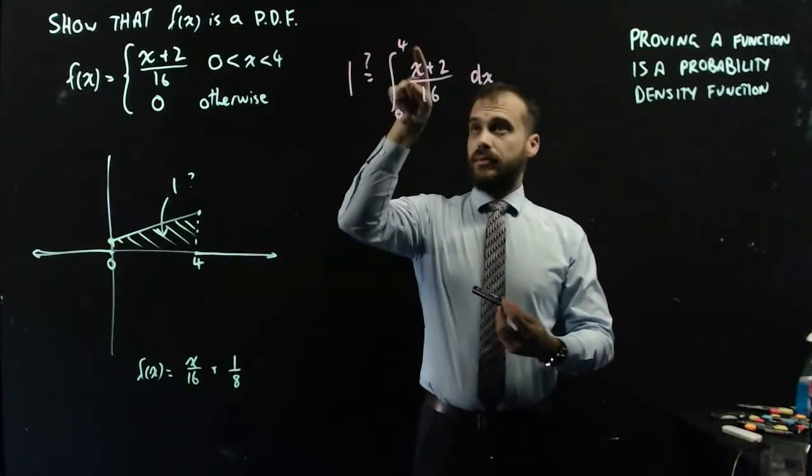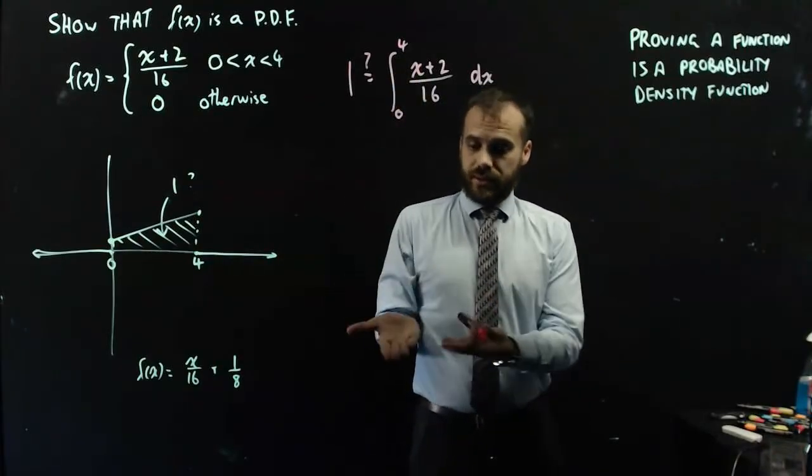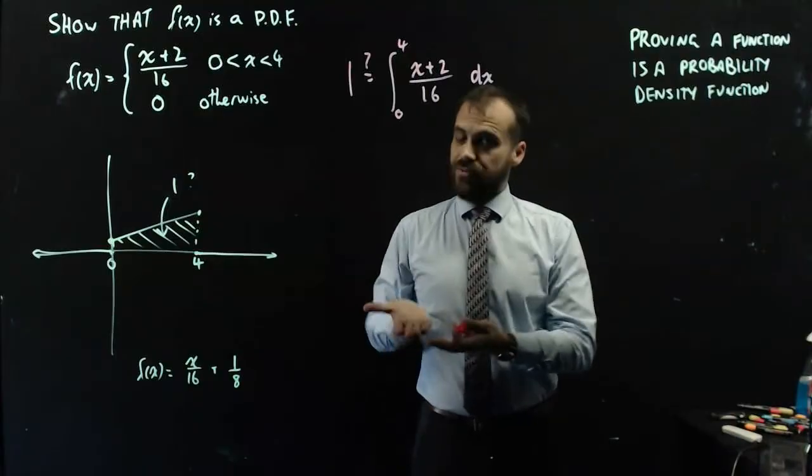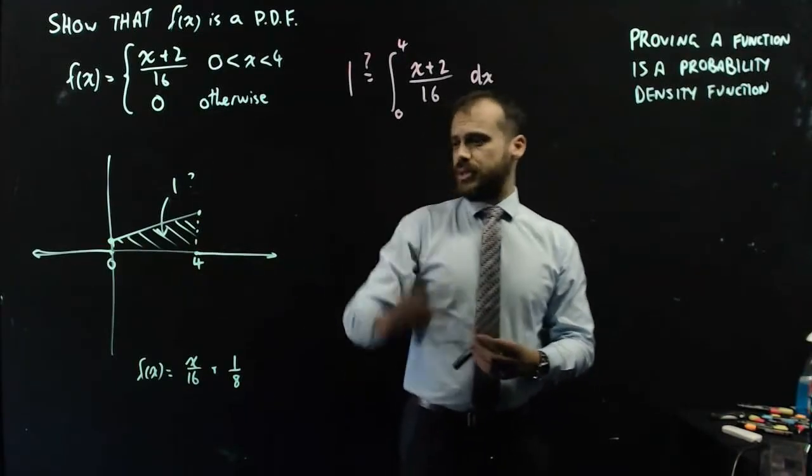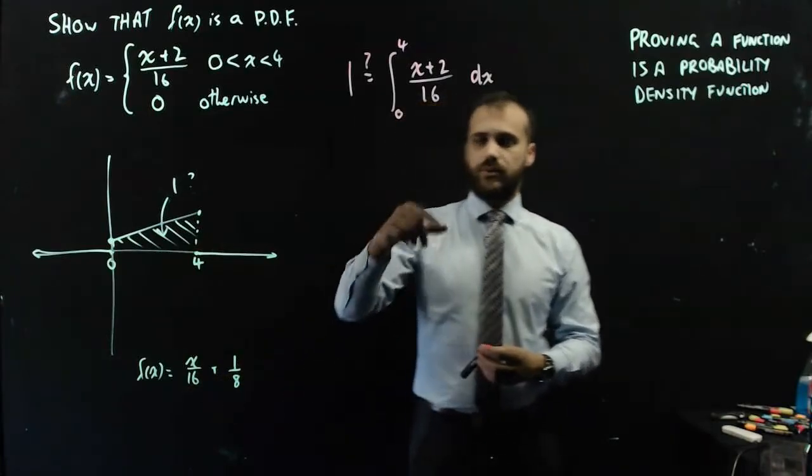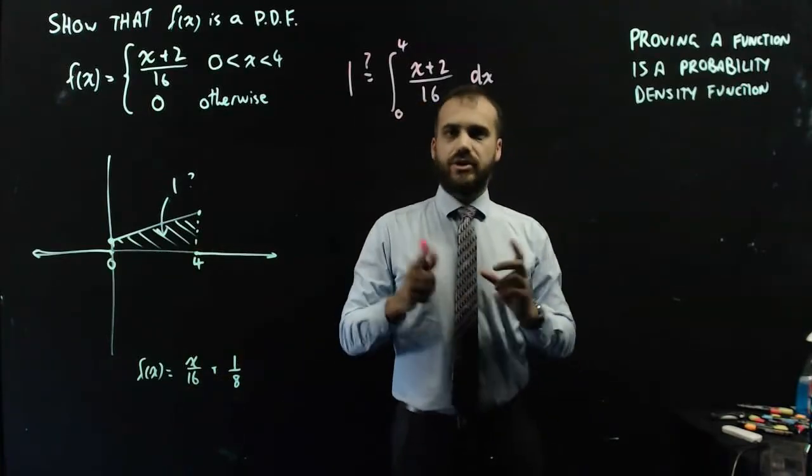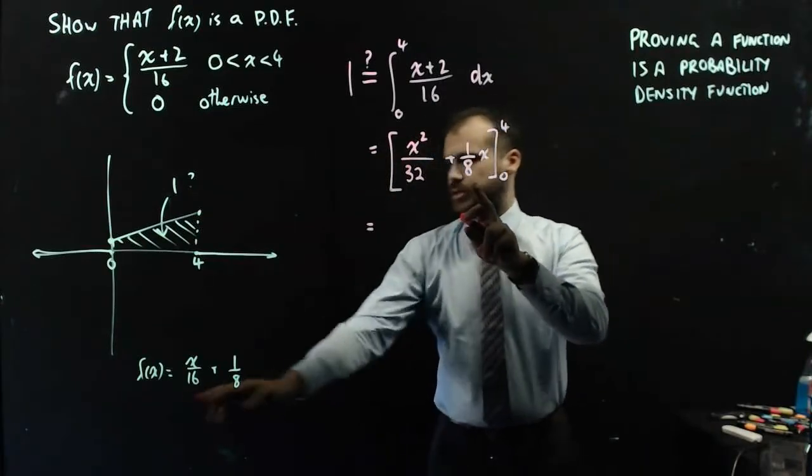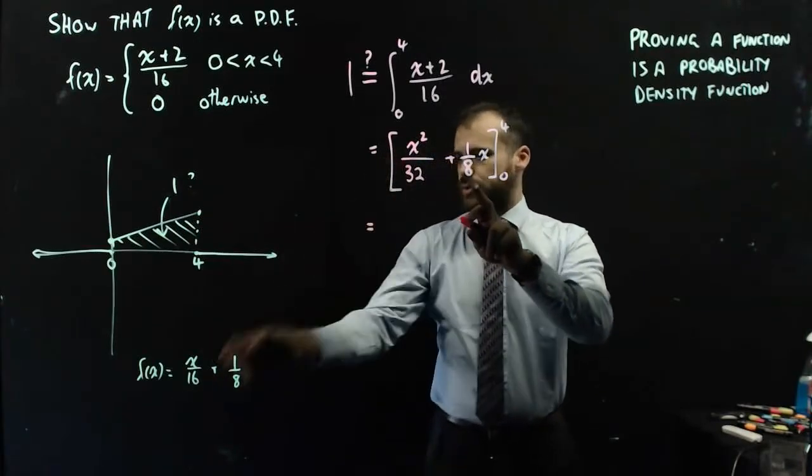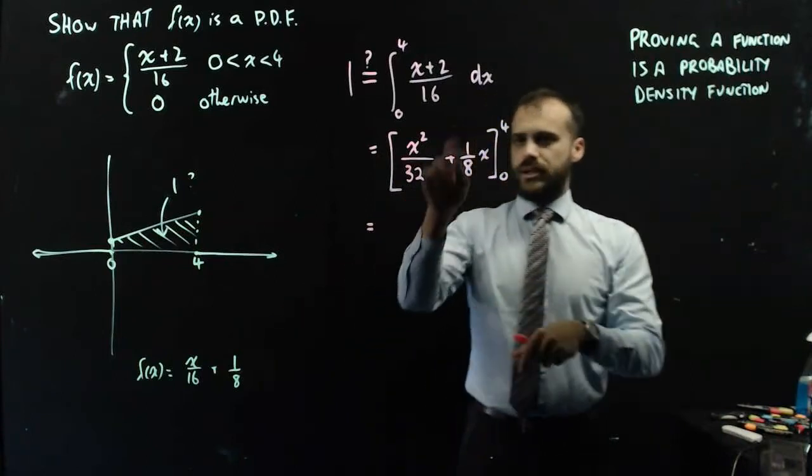I'm going to integrate that, I'm going to integrate it between 4 and 0, and I'm going to see what answer pops up down here, and if the answer is 1, then I'm in business. Now, it's going to be easier to integrate it in this form than it was in the other form, so I'm going to integrate it like that. So there's my first line of integration, I've just integrated it using this here, so it's x squared over 32 plus 1 eighth x.